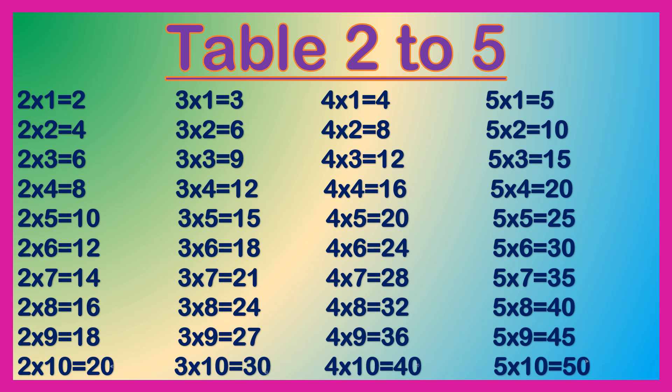3 1s are 3, 3 2s are 6, 3 3s are 9, 3 4s are 12, 3 5s are 15, 3 6s are 18, 3 7s are 21, 3 8s are 24, 3 9s are 27, 3 10s are 30.